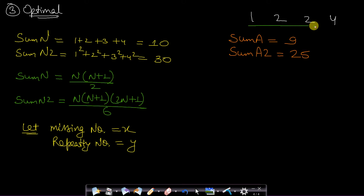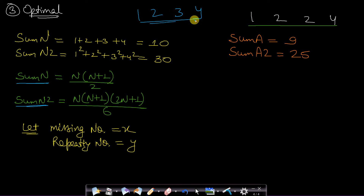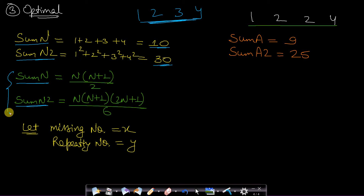Let us assume our array is 1, 2, 2, 4. The sum of n numbers is n*(n+1)/2, and the sum of n squared numbers is n*(n+1)*(2n+1)/6. The original sequence should have been 1, 2, 3, 4. The sum of n numbers will be 1+2+3+4 = 10. The sum of squares will be 1²+2²+3²+4² = 30. Using these formulas we can derive expressions to find the missing and repeating numbers.